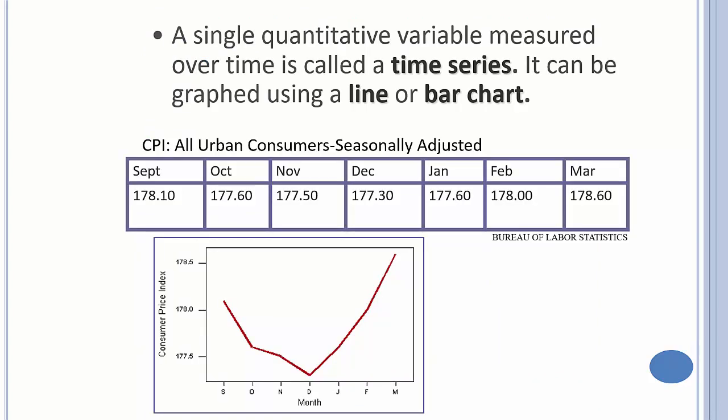You can have a time series where you can look at the change over time of a certain thing. This is a time series for a consumer price index over time starting in September, and you can see it went down to December and then back up. So it just gives you an idea of how much things have changed, and usually when you do things over time you'll do a line graph like this or what's called a time series chart.